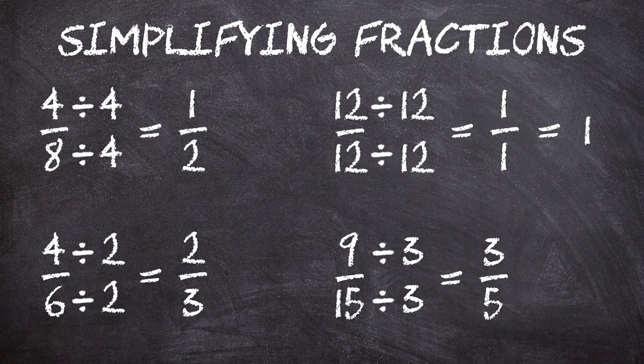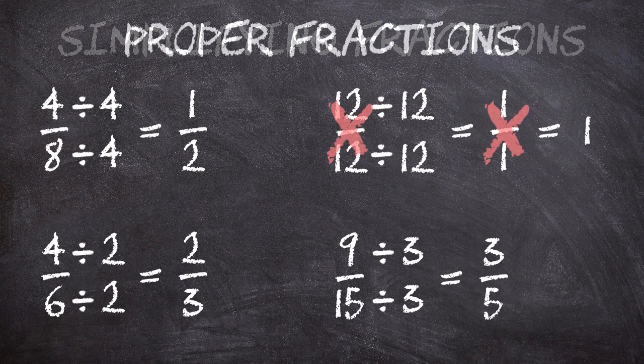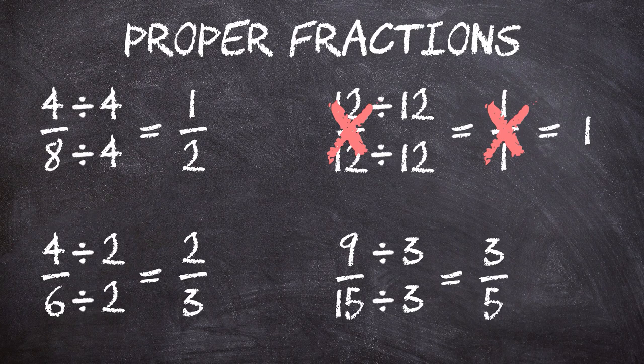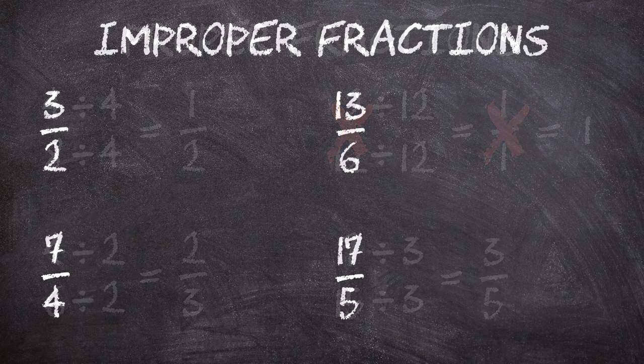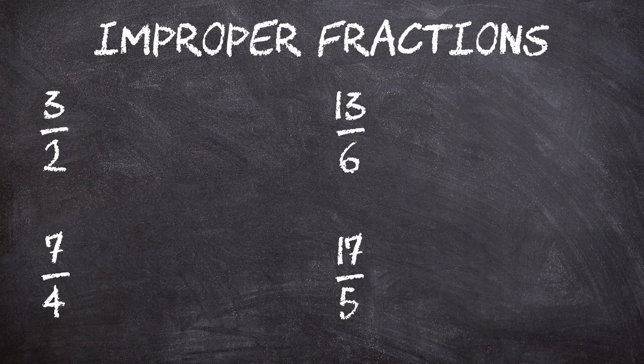All of these, with the exception of twelve over twelve, are what we call proper fractions. A proper fraction is one whose value is less than one — that is, the numerator is less than the denominator. What about improper fractions, ones where the numerator is greater than the denominator?